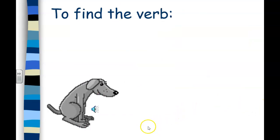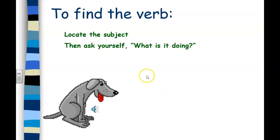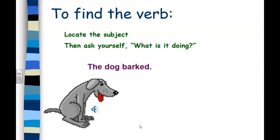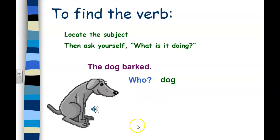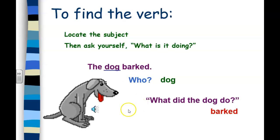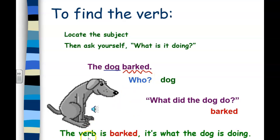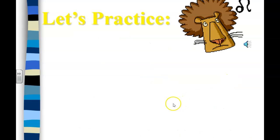To find the verb in a sentence, first locate the subject and ask yourself: what is the subject doing? For example, 'The dog barked.' What's the subject? It's the dog — who is the sentence about? The dog. What is the subject doing? The dog barked. Barked is the action — the verb. I used a squiggly line to show it's the verb.